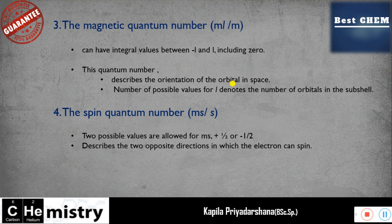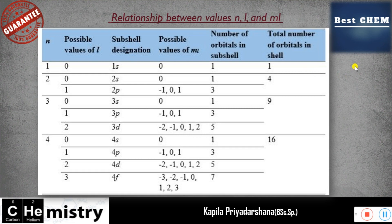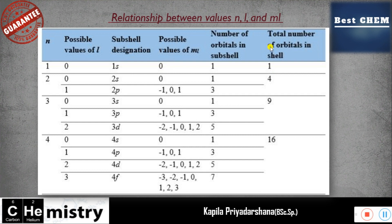Now let's see the relationship between values of n, l, and ml. For n equal to 1, the possible value of l is 0 (since l goes from 0 to n minus 1), the subshell designation is 1s, the possible value of ml is 0, and the number of orbitals in that subshell is 1. So the total number of orbitals in shell n equals 1 is 1.